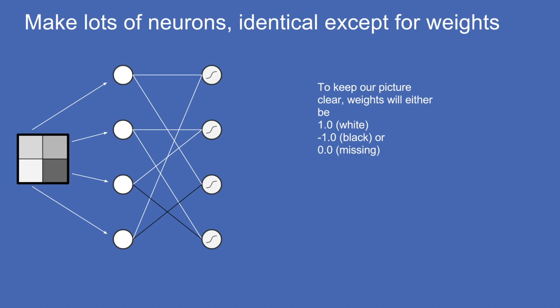Instead of just one of those, assume you have a whole bunch — four are shown here, but there could be 400 or 4 million. To keep our picture clear, we'll assume the weights are either plus one (white lines), minus one (black lines), or zero (missing entirely). In actuality, all of these neurons are each attached to all of the input neurons and all have some weight between minus one and plus one.